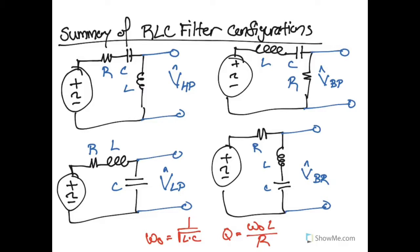In addition to creating Band Pass and Band Reject filters, RLC circuits can also be used to create High Pass and Low Pass signals.